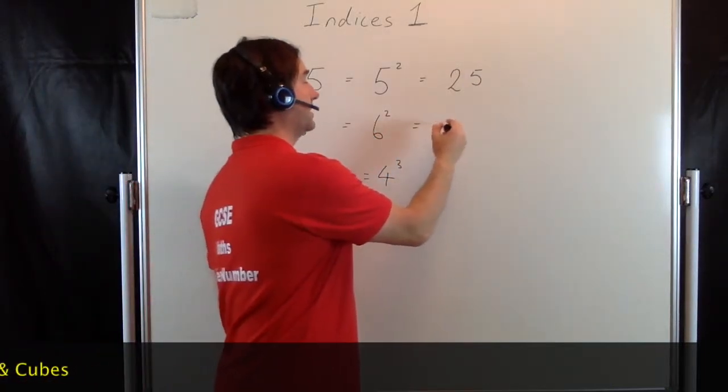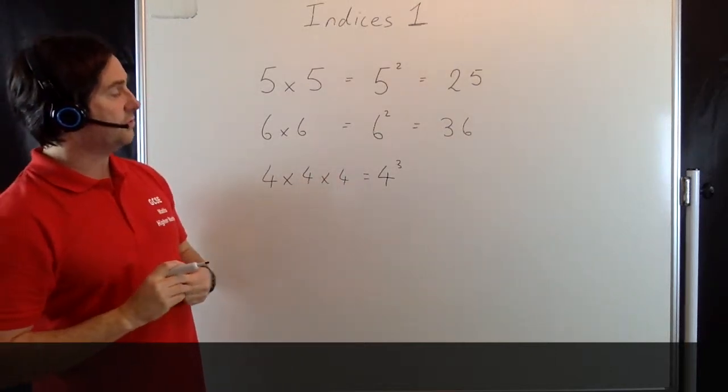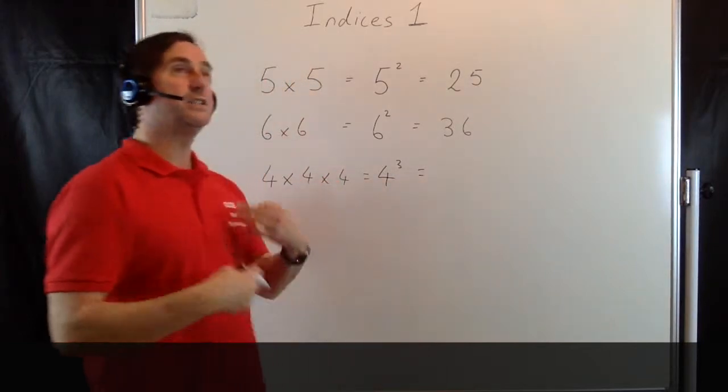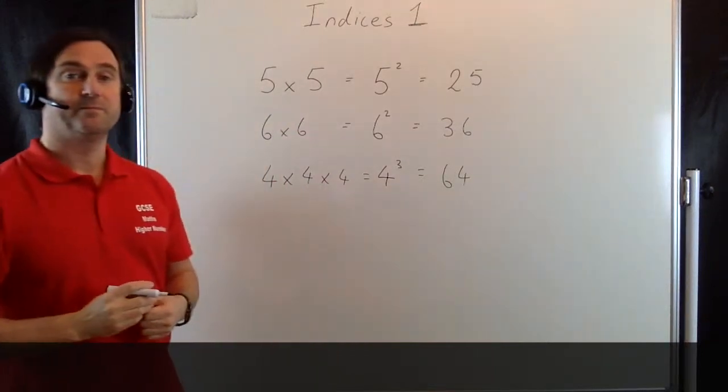And the value of 4 cubed, well that's going to give you 4 × 4 which is 16, times that by 4 again which gives you 64.